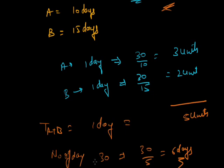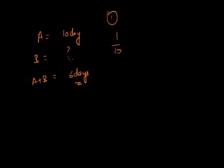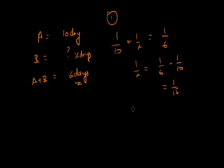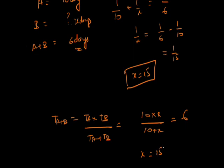The problem can also be asked another way: A can do the piece of work in 10 days, B is unknown, and A plus B combined can do the work in 6 days — find B's time. By the first method (one day work): 1/10 + 1/x = 1/6, so 1/x = 1/6 − 1/10 = 1/15, therefore x = 15. Using the formula (second method): T(A+B) = TA × TB / (TA + TB), so 10x / (10 + x) = 6; solving gives x = 15.